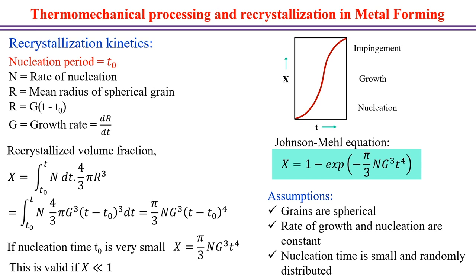Recrystallization kinetics can be expressed with the following parameters: t₀ is the nucleation period, N is the rate of nucleation, r is the mean radius of spherical grains, and g is the growth rate (dr/dt). The mean radius at any time t is r = g(t − t₀), since nucleation occurs over time period t₀, after which the grain grows.